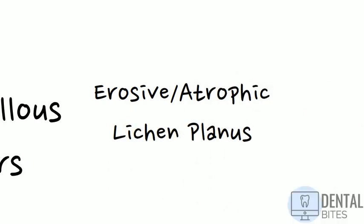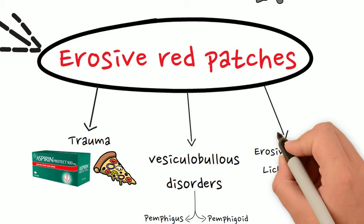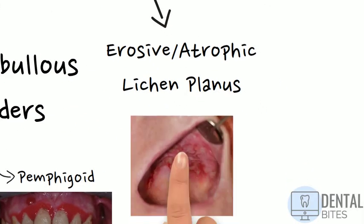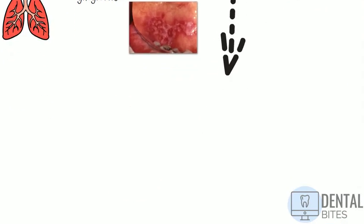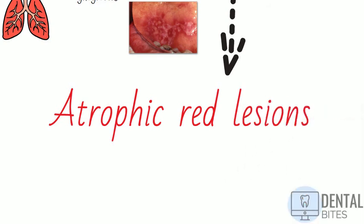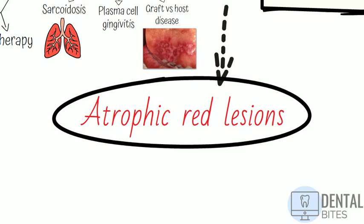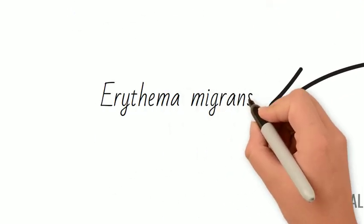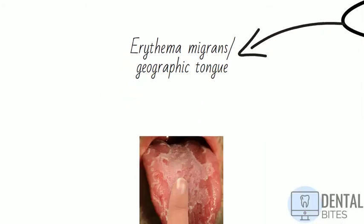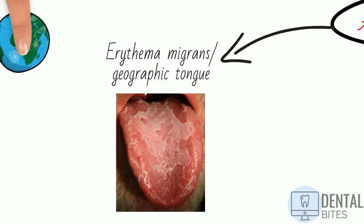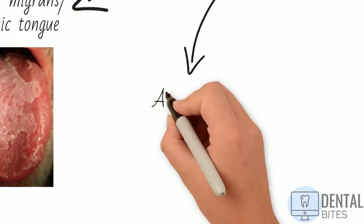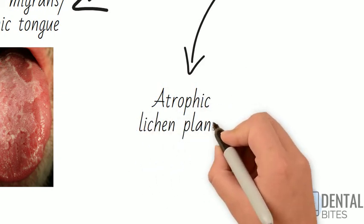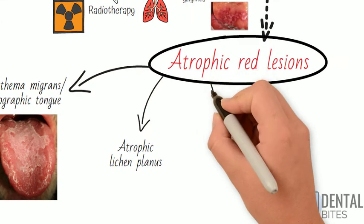We also have oral lichen planus, which characteristically presents as white patches, but both the erosive and atrophic forms of the disease can give red lesions too, with or without white striations. Next we have the atrophic types of red lesions, where the epithelium is intact but thinned. An example of this is erythema migrans, also known as geographic tongue. You get patches on the tongue that look like countries on a map that move around — hence the name. In technical terms it's described as localised depapillation of the filiform papillae on the dorsum of the tongue. Similarly, atrophic lichen planus can give red lesions too. The cause of lichen planus isn't fully understood but we know it's a cell-mediated autoimmune condition affecting keratinocytes.